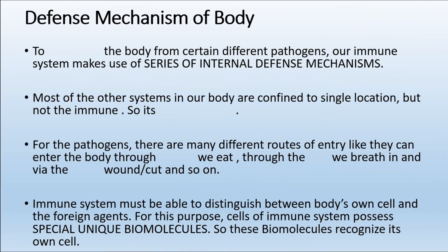From this story we can infer that the immune system is a protective system — it is there to protect the body from different pathogens, whether virus, bacteria, or fungi. Within our body there is a defense mechanism that will try its best to counter all pathogens. Unlike other systems like the respiratory system that are confined to a single location, the immune system is everywhere — it protects every part of the body and is not localized.